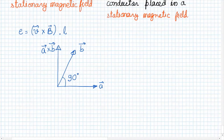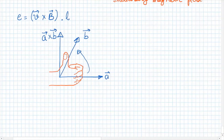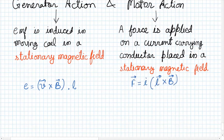The angle between A cross B and A is 90 degrees, and the angle between A cross B and B is also 90 degrees. The direction of A cross B can be given by the right-hand screw rule — if we move our fingers from A to B, then the direction of the thumb is the direction of A cross B. In the case of motor action, the force on a current carrying conductor placed in a magnetic field is given by I times L cross B, where I is the current, L is the length, and B is the flux density.